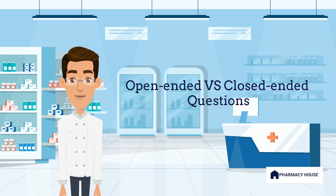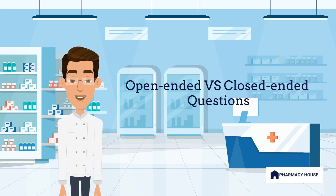Hi, I'm Brian, your friendly pharmacist. In this episode, let's look at how open-ended and closed-ended questions are best utilized when obtaining a patient medication history. The general process to obtain a patient history by the pharmacist starts with broad open-ended questions, followed by more focused closed-ended questions to obtain more specific information.